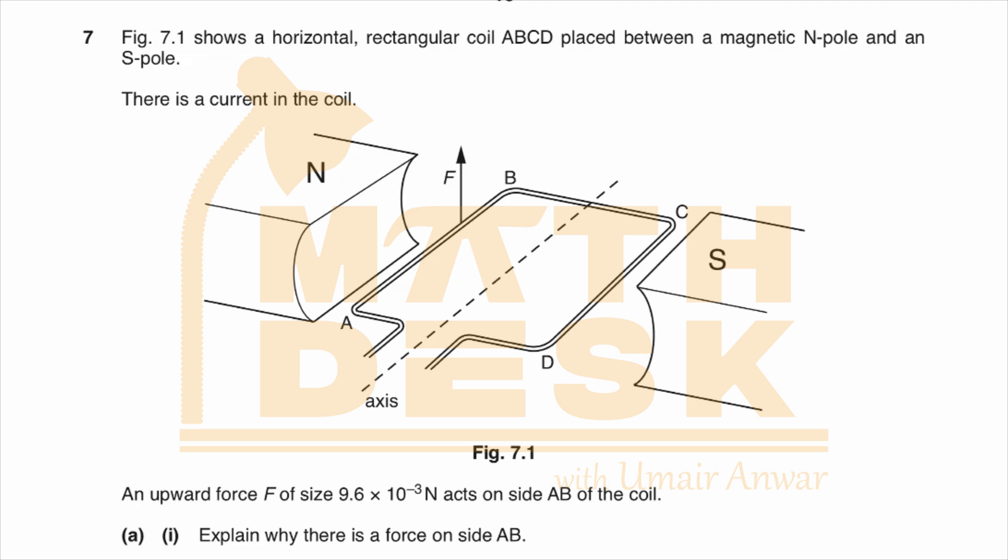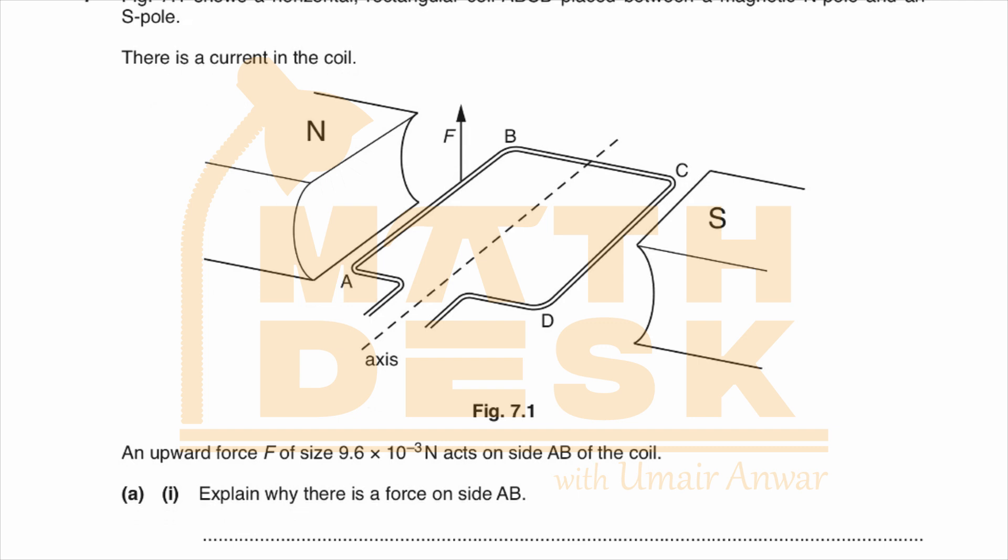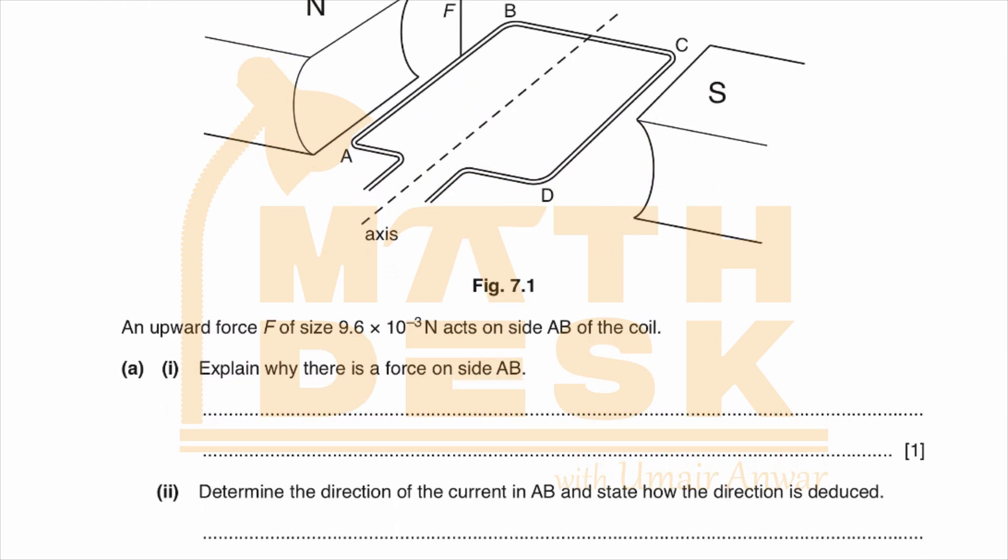Figure 7.1 shows a horizontal rectangular coil ABCD placed between a magnetic north pole and a south pole. There is a current in the coil. An upward force F of size 9.6 × 10⁻³ N acts on side AB of the coil. Explain why there is a force on side AB.